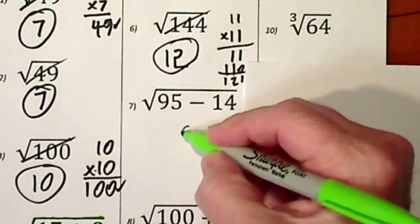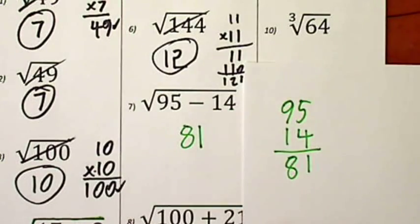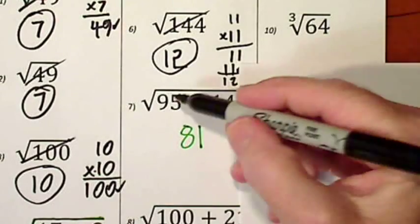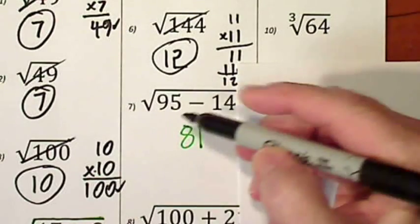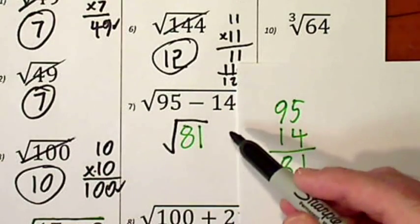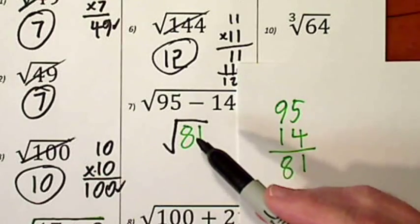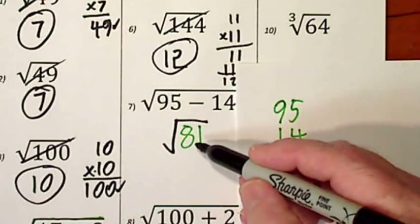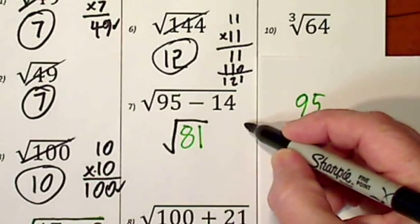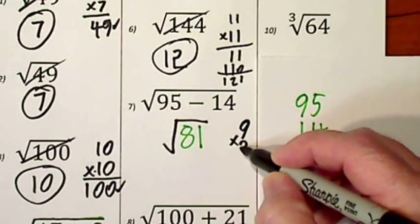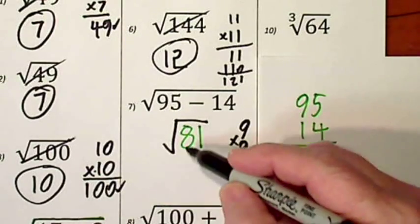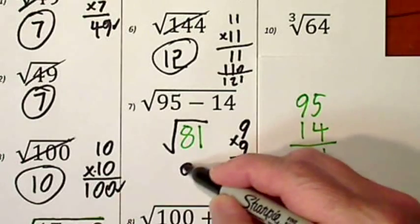So 95 subtract 14 gives us 81. I put that result here. And then I bring down the radical symbol because I have not used that yet. Now I take the square root. The square root of 81 is 9 because 9 times 9 gives us 81.